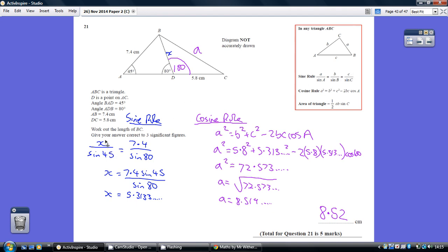So rearranging this to get X on its own, we have to undo this dividing by sine 45, so we multiply by sine 45. So X equals 7.4 sine 45 all over sine 80. Popping that into a calculator, we get 5.3133 and so on.